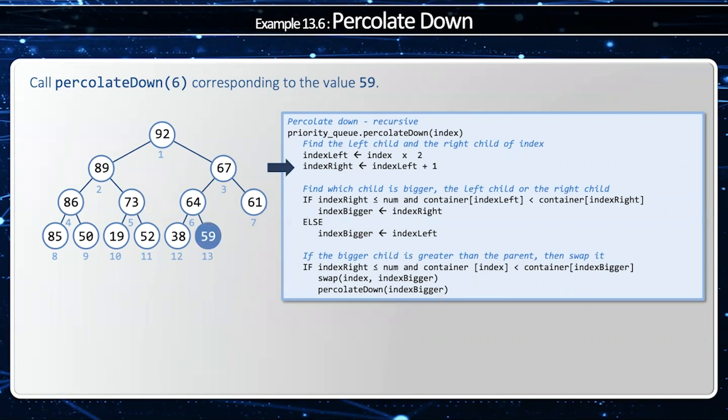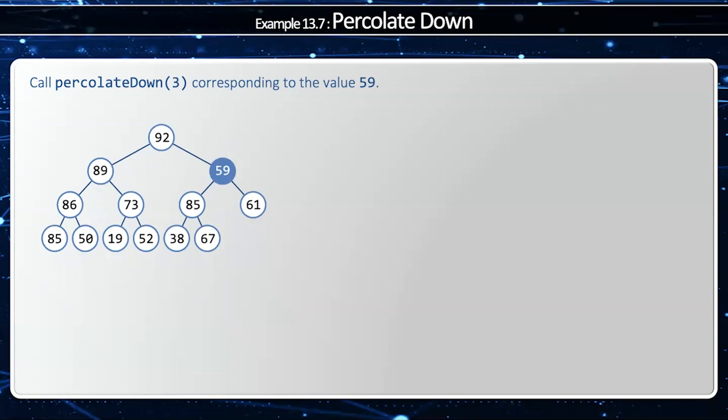Now I'm going to call the program again, because this is recursive, and my index left and index right are going to be 26 and 27. And this is going to be, I'm not less than num, so I'm going to go into the failure condition, and I'm going to stop. So now my heap is in proper format. Okay, let's look at another example.